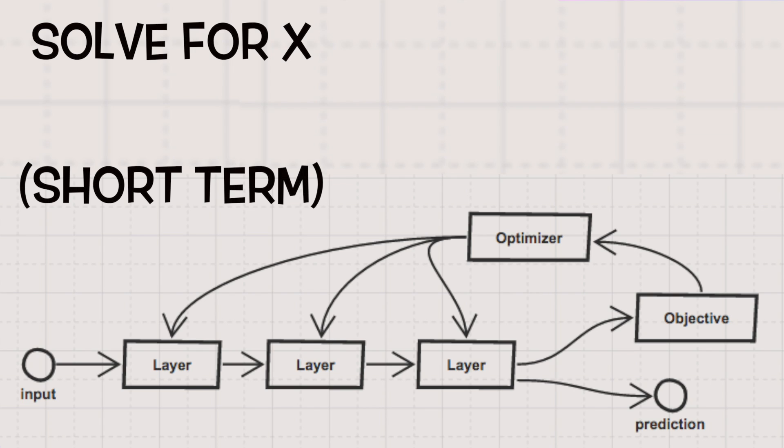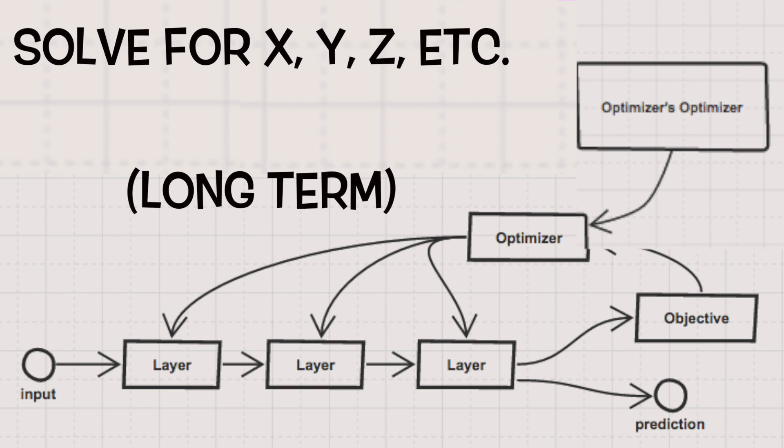That is, it learns how to perform well at an immediate task in the short term, and in the long term, it learns a common structure across many tasks.